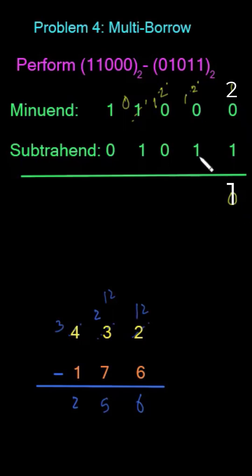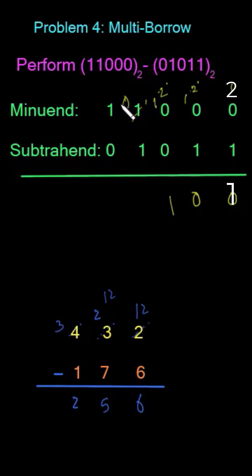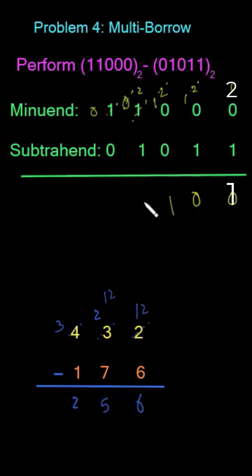Now 2 minus 1 gives me 1, 1 minus 1 gives me 0, and 1 minus 0 gives me 1. Now I have 0 minus 1, so I go to this column — here it will give me 1, so I'm left with 0, and 1 of this column equals 2 in this column. 2 minus 1 is 1, 0 minus 1 is 1, and 0 minus 1 is 1.